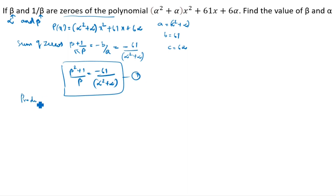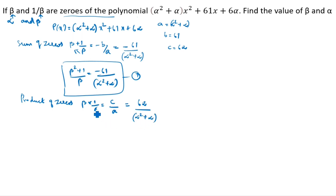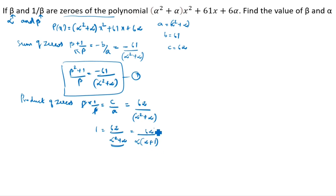Product of zeros: beta into 1 by beta is equal to c by a. c is 6 alpha, and a is alpha squared plus alpha. Beta times 1 by beta gives 1, so 1 equals 6 alpha by (alpha squared plus alpha). In the denominator, factor out alpha: alpha(alpha plus 1). The alpha cancels, giving 1 equals 6 by (alpha plus 1). Cross-multiplying: alpha plus 1 equals 6.